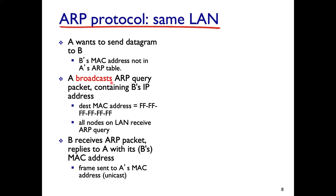A broadcasts an ARP query with the destination MAC address set to FF:FF:FF:FF:FF:FF, meaning every adapter on the local area network will process it. B receives it and responds because the IP address in the query matches B's IP address. B responds with a unicast ARP reply back to A, since A's source Ethernet address was included in the original broadcast. So the ARP query is broadcast, but the ARP reply is unicast.